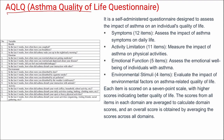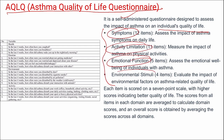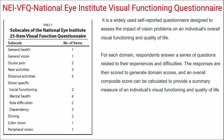Next is the Asthma-Related Quality of Life Questionnaire — a self-administered questionnaire designed to assess the impact of asthma on an individual's quality of life. It is a 42-item questionnaire under four domains: symptoms, activity limitation, emotional function, and environmental stimuli. Each item is scored on a seven-point scale, with higher scores indicating better quality of life. Domain scores are averaged, and an overall score is obtained by averaging across all domains.